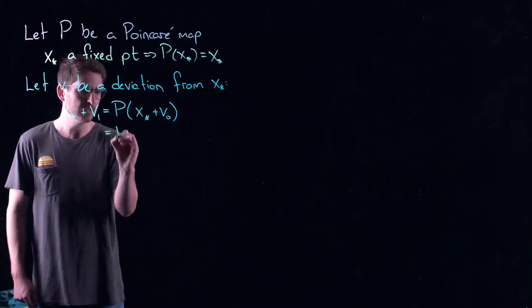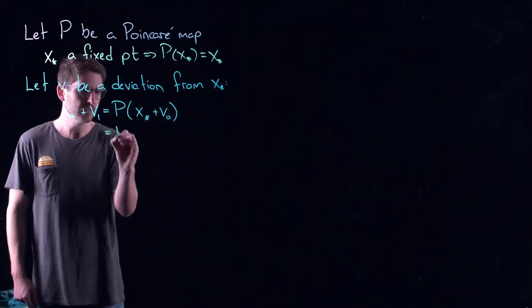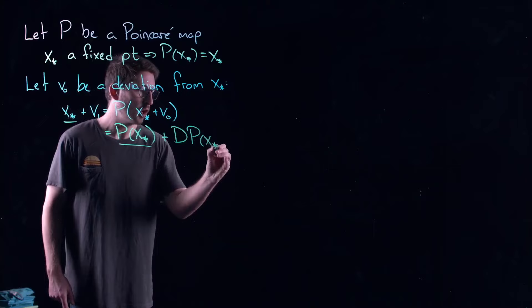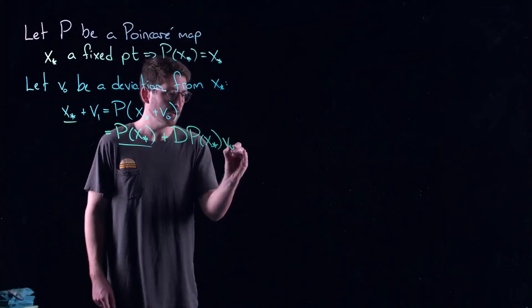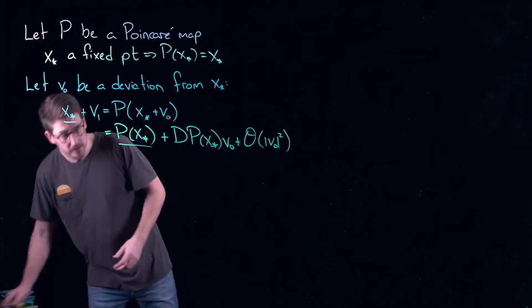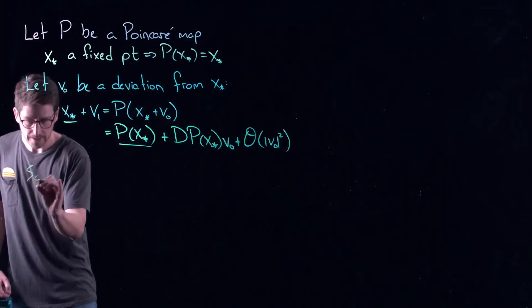Doing a Taylor series expansion, I get p(x*), which cancels, and then I have dp(x*) — the Jacobian matrix of the Poincaré map evaluated at x* — times v₀, plus higher order terms. Since v₀ is small I can neglect the quadratic terms. This gives an associated linear mapping. The only difference from continuous time is that we're working in discrete time.